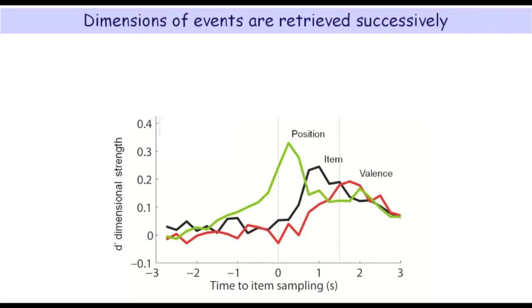First, position coding was evident, then coding about the identity of the items, and finally information about the reward valence of the items drove divergent patterns in the ensemble representations. This suggests that the same cells code for different information at different times, and it is noteworthy that there are epochs in which all dimensions are significantly coded, suggesting binding of these elements at the level of the hippocampus.